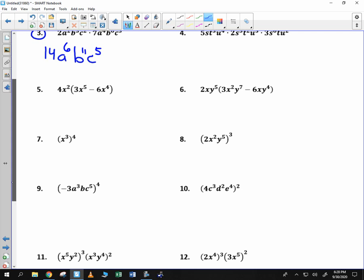Sometimes the problems start to look a little bit different. And here, we're going to distribute across subtraction. So 4x² times 3x to the fifth, 12x to the seventh, subtraction sign, then 4 times 6 is 24, and x² times x to the fourth is x to the sixth.